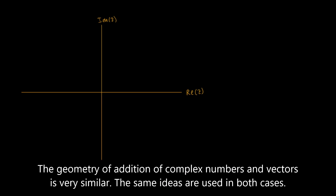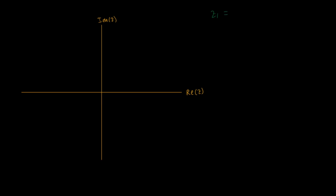Here is the Argand plane, and we will use this to understand what the addition or subtraction of complex numbers means geometrically. So let's take a quick example. Let's take Z1 to be equal to 5 plus 5i and Z2 to be equal to 3 plus 4i.